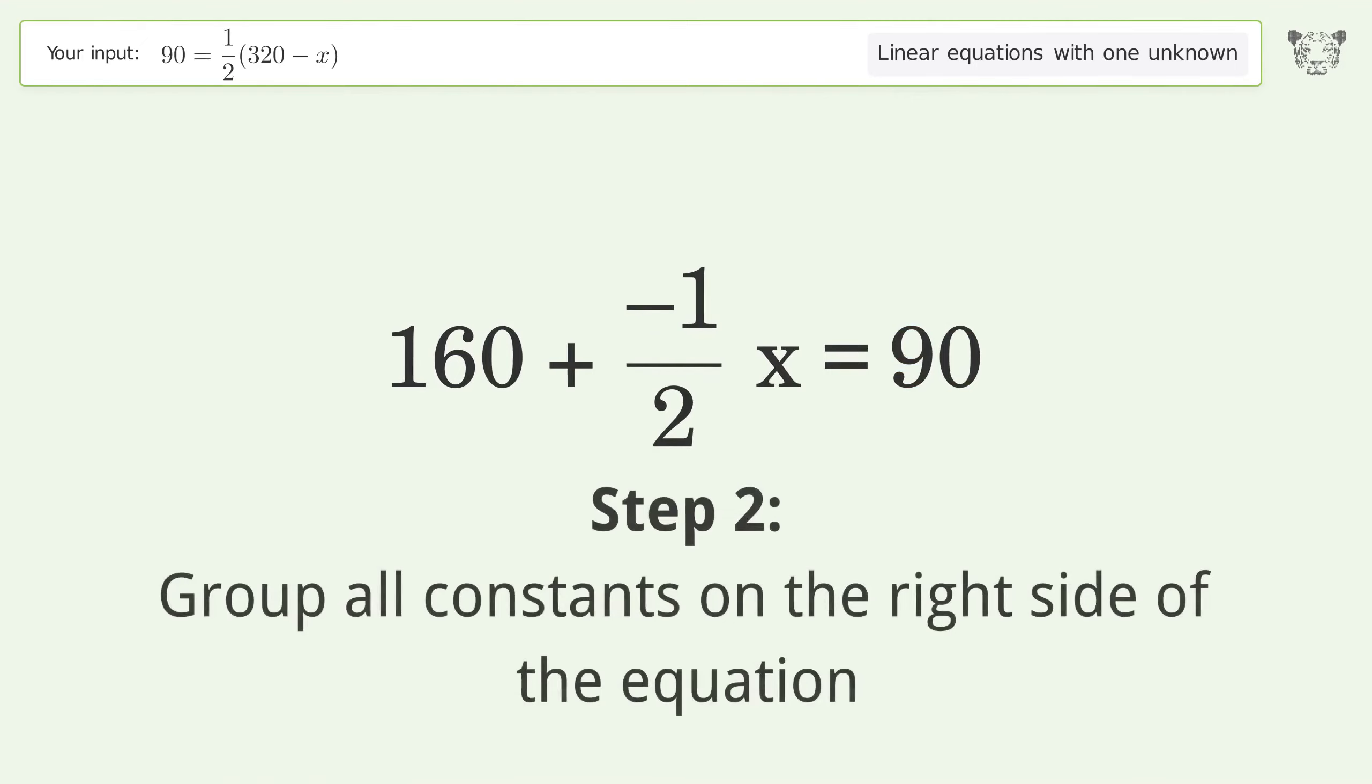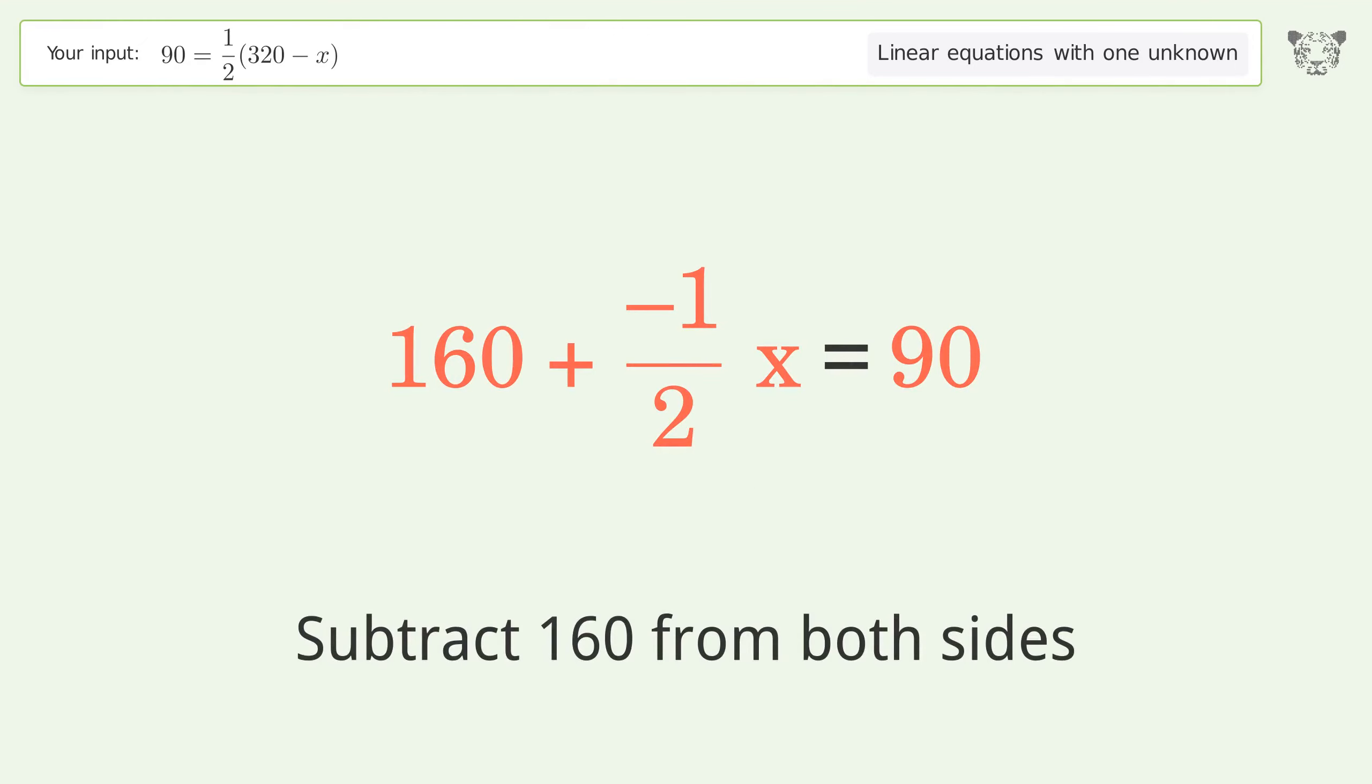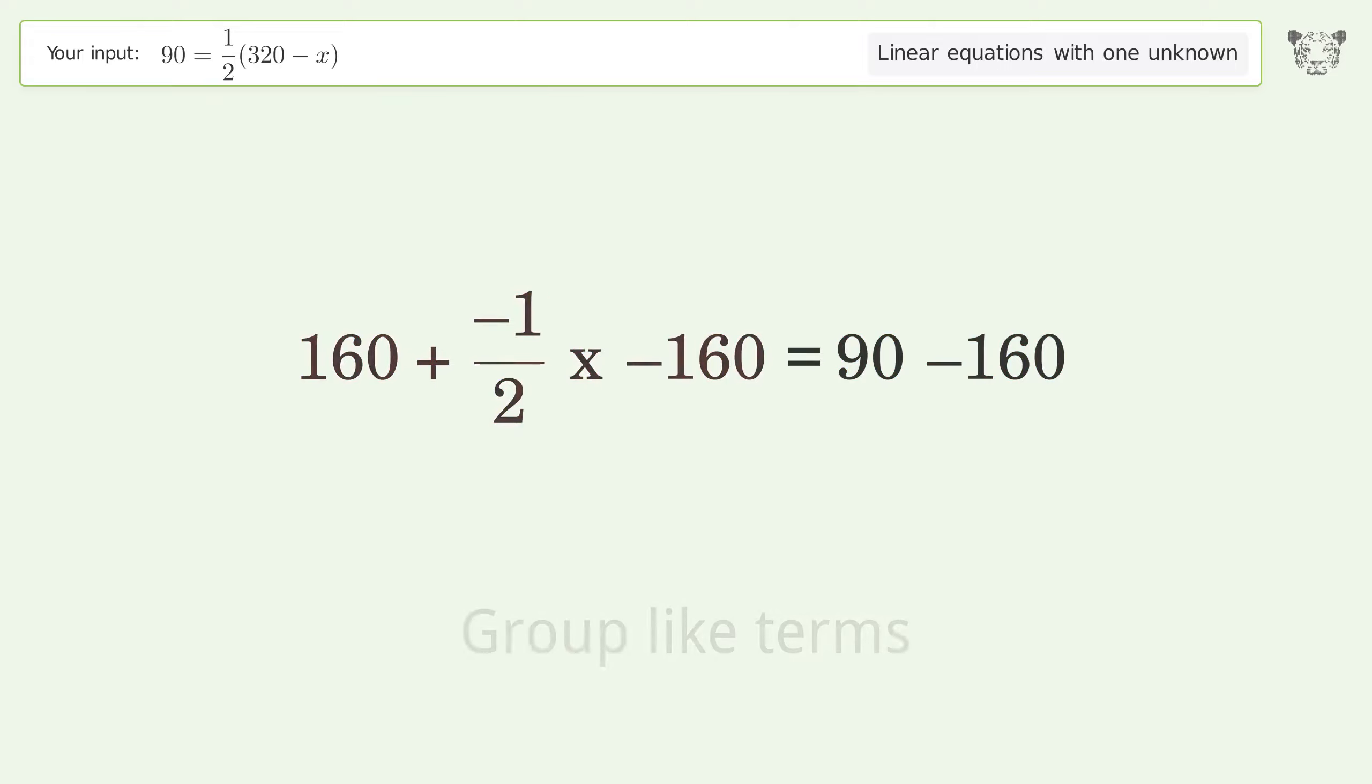Swap sides. Group all constants on the right side of the equation. Subtract 160 from both sides.